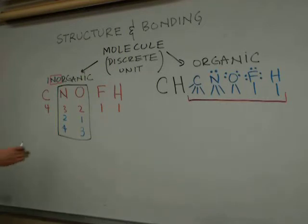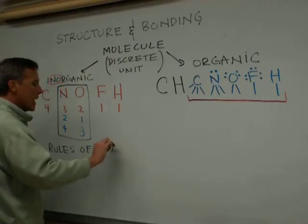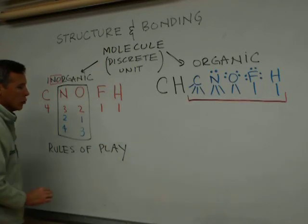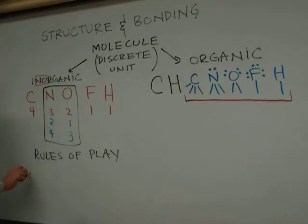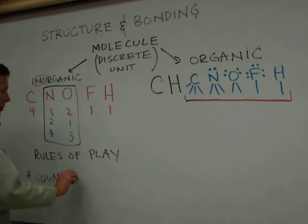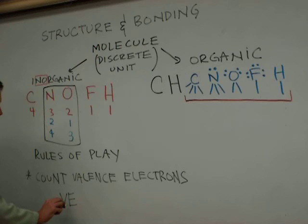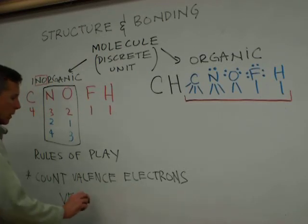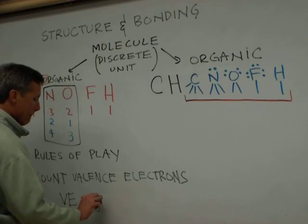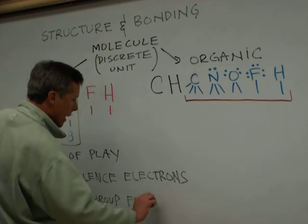We have to come up with some different rules of play for drawing inorganic structures. And the number one rule of play is to count valence electrons, where valence electrons equals the group number for an atom.